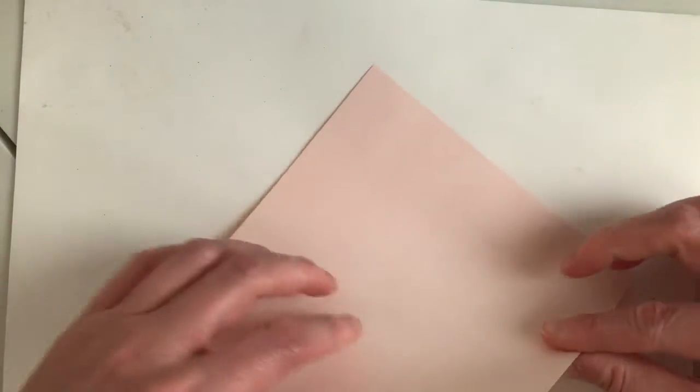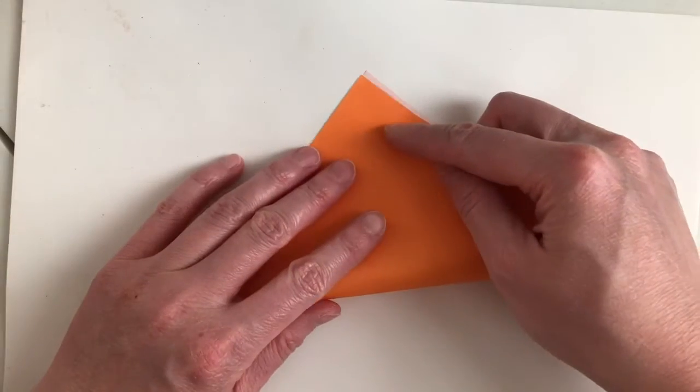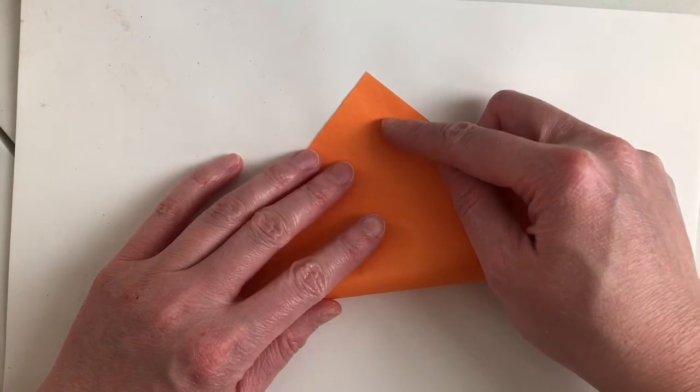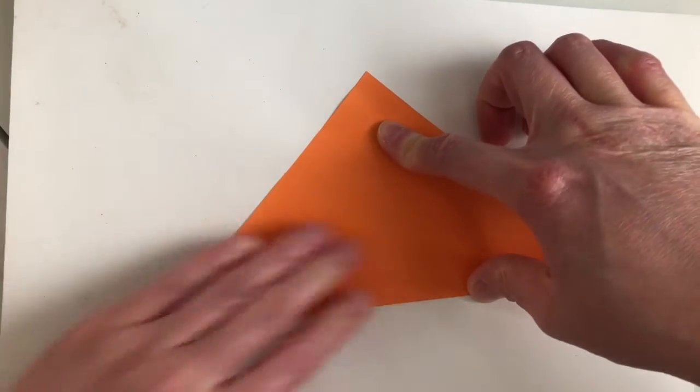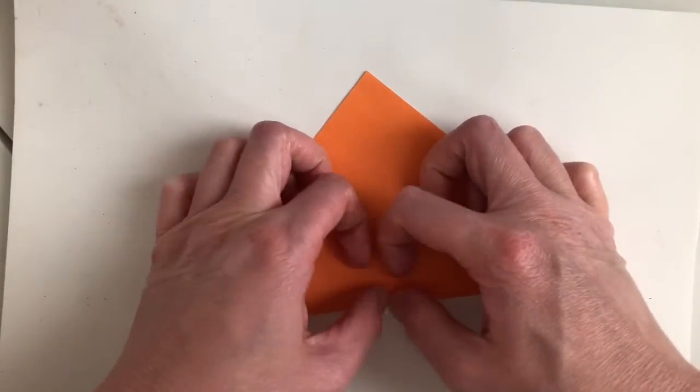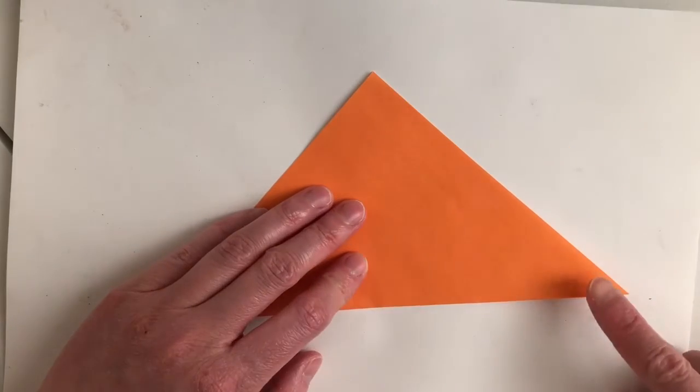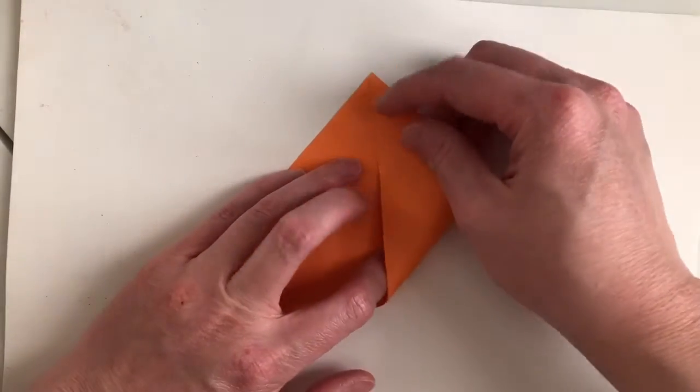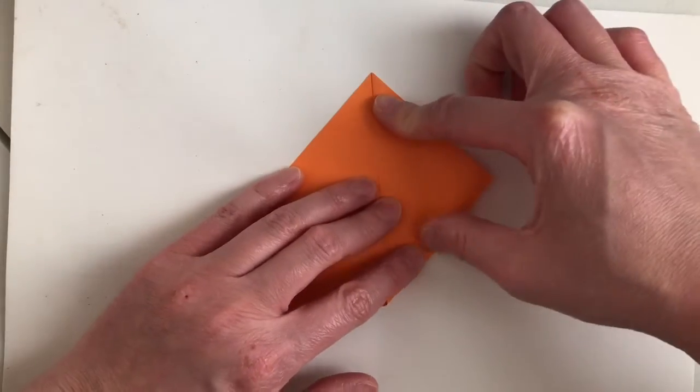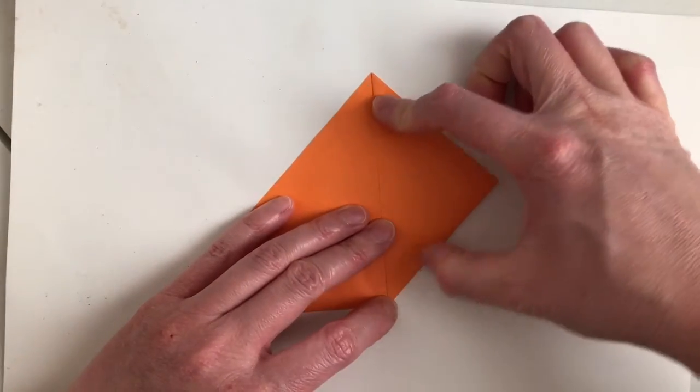So what we want to do first is fold up one corner to meet the opposite corner. Make a nice crisp crease. Then we'll take this corner and fold it up to the top corner. Make another nice crisp crease.